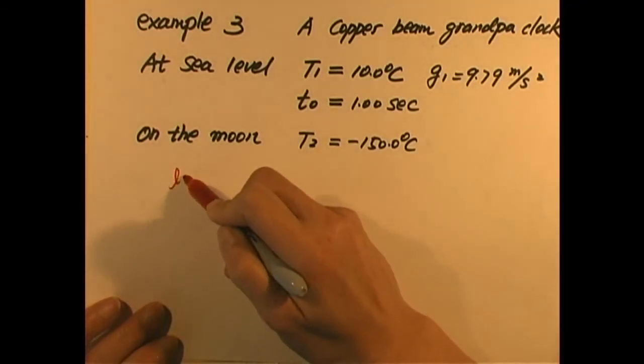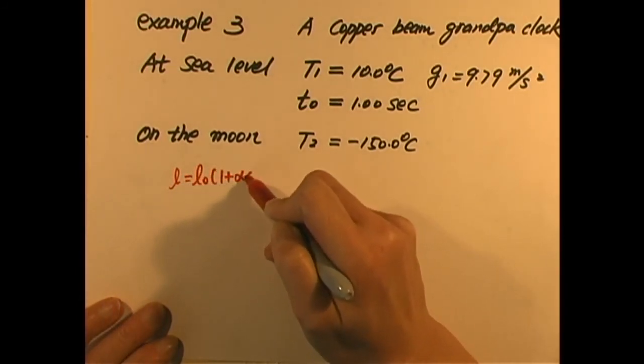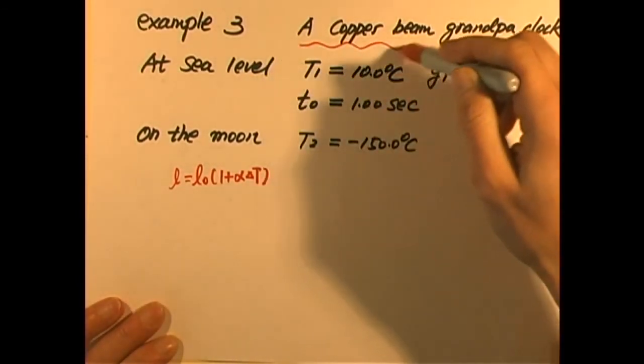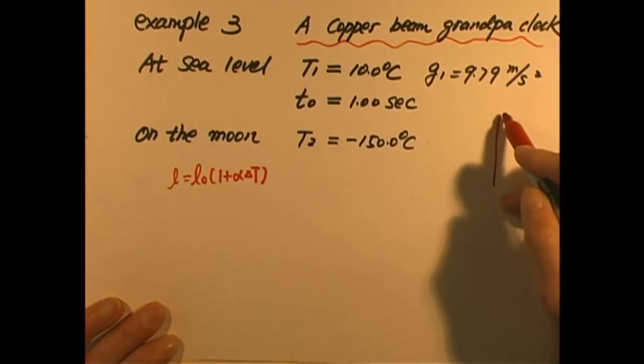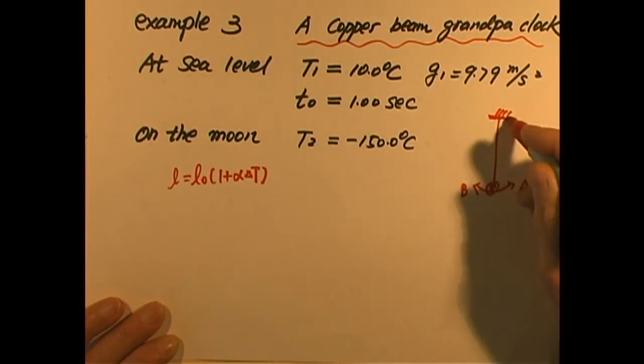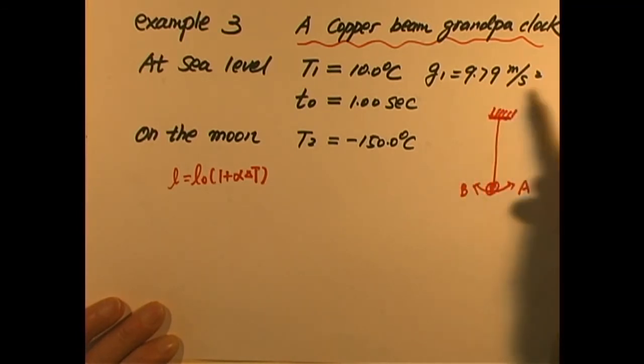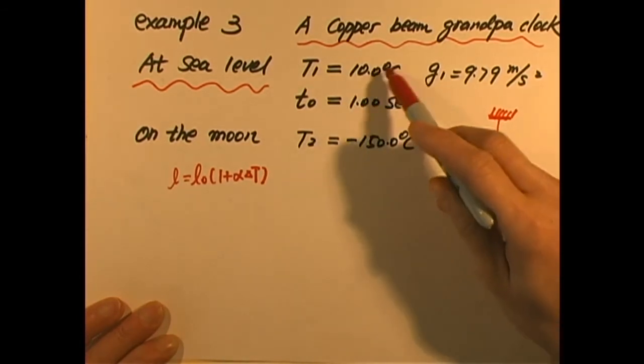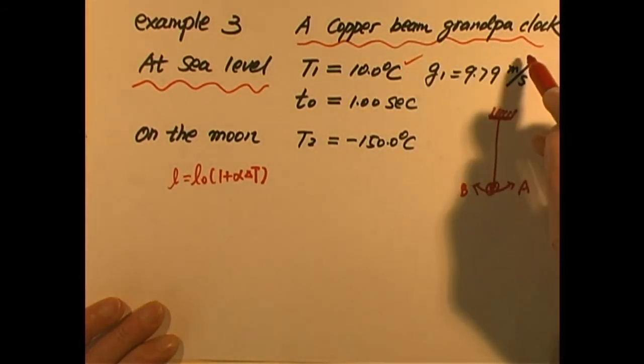Remember, we learned that L final equals L initial times 1 plus alpha delta T, that length changes. Now, this is a copper beam grandfather clock. What does that mean? For example, a grandfather clock has a metal rod and this is the bob, and then swing back and forth. If starting from point A swing to B back to A, that is called one period.